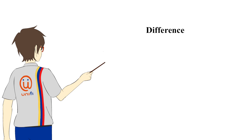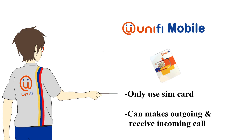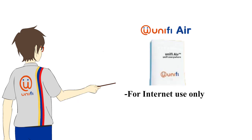What are the differences between Unify Mobile and Unify Air? Unify Mobile is using a SIM card only and can make outgoing and receive incoming calls. However, Unify Air is only used for internet.